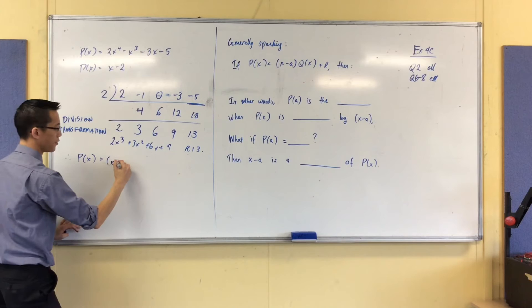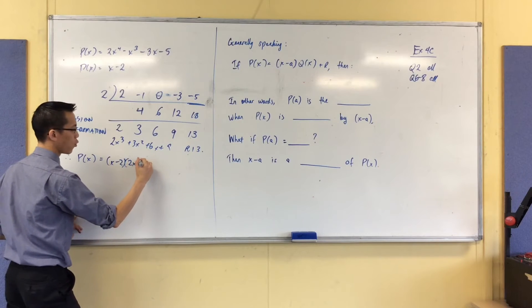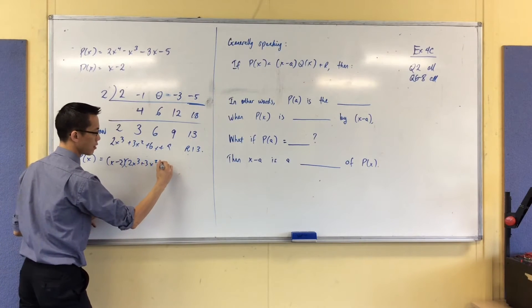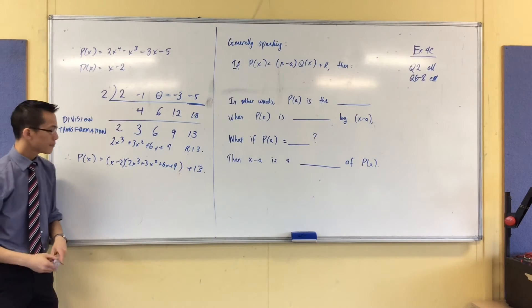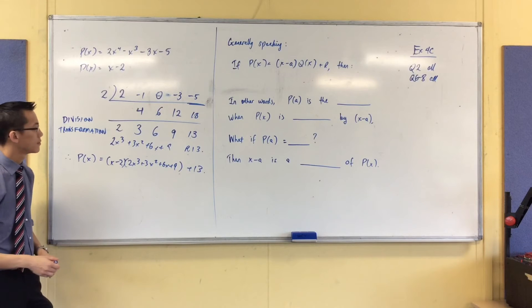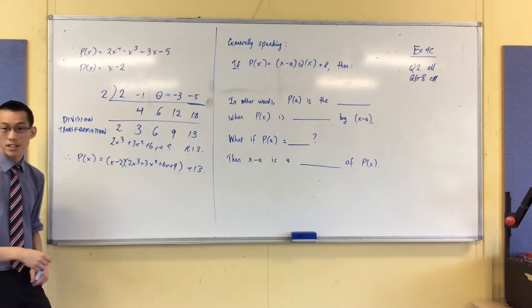Let's do that again. Divisor times quotient plus remainder. How does it look? Are you happy?